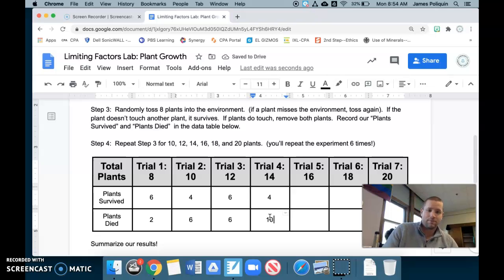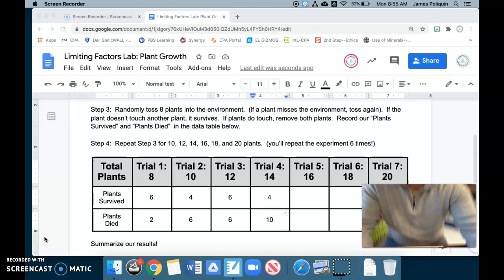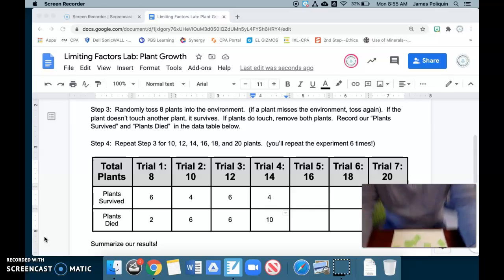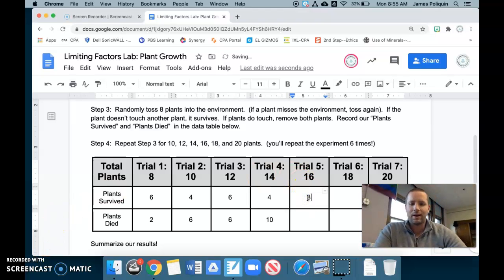Wipe your board. Let's repeat for trial five. So trial five, I tossed 16 plants in there. Let's see what happened. So as we take a look, all of those plants died. So there's one, two, three, four, five, six, seven, eight plants that survived, which means there's two, four, six, eight plants that also died. So eight plants survived, eight plants died.